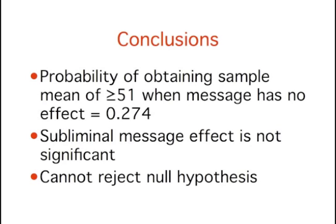What can we conclude from this? The probability is 0.274 that a sample mean of 51 or higher would be found even if the subliminal message has no effect. This is a relatively high probability. The probability should be much lower, such as less than 0.05, in order to strongly support a conclusion that the independent variable has an effect. The probability of 0.274 indicates that the finding might well have been due to chance, and therefore we do not reject the null hypothesis. This experiment does not provide convincing evidence that subliminal messages have an effect, nor does it demonstrate that subliminal messages have no effect.